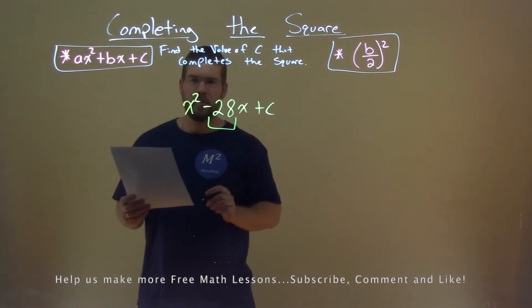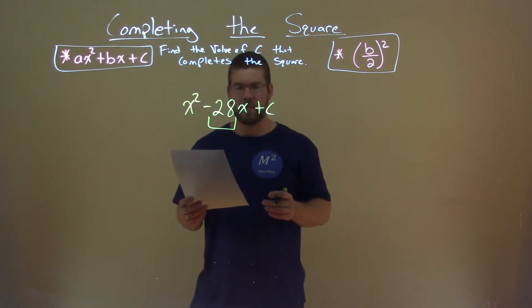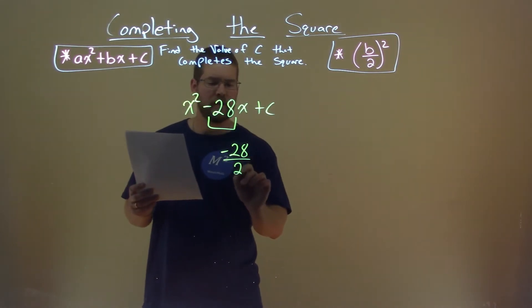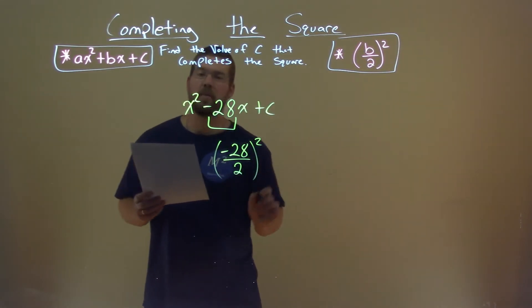We first have a look at our b value, negative 28. We take that negative 28, and we're going to plug it in to that formula. We divide it by 2, and then we square it.